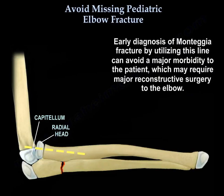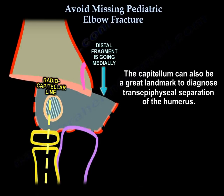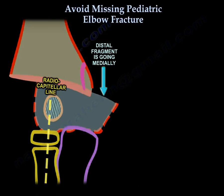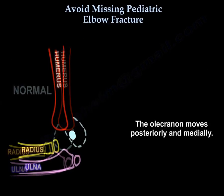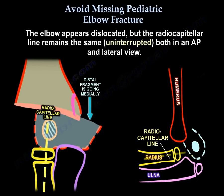This radiocapitellar line is very important in the diagnosis of Monteggia fracture with subtle proximal ulnar fracture and radial head subluxation — it is key in determining normal or abnormal radial head position. Early diagnosis of Monteggia using this line can avoid major morbidity requiring reconstructive surgery. The capitellum is also a great landmark for diagnosing transepiphyseal separation of the humerus: the olecranon moves posteriorly and medially, the elbow appears dislocated, but the radiocapitellar line remains uninterrupted in both AP and lateral views.